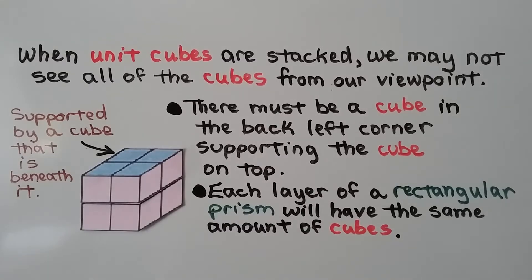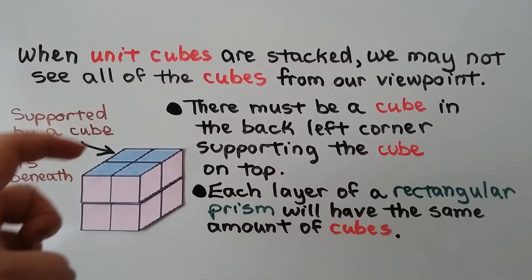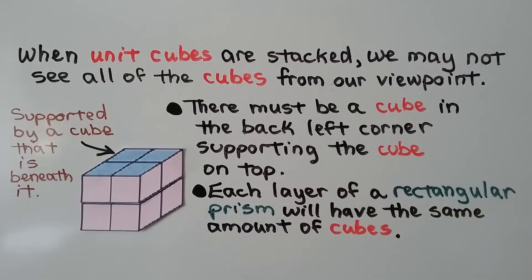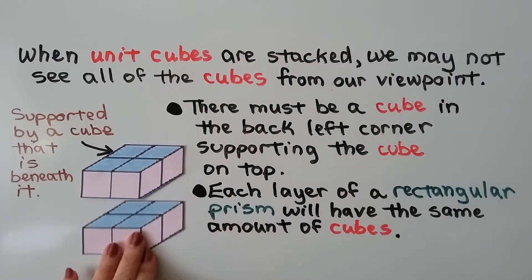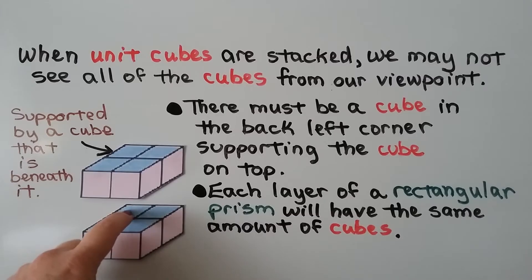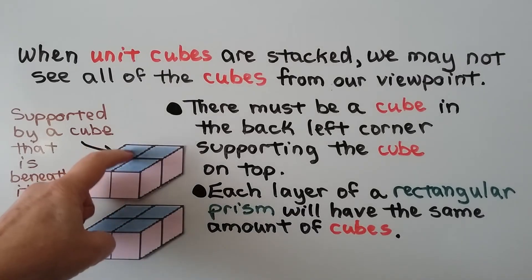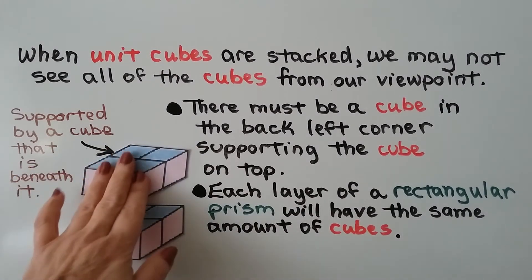When unit cubes are stacked, we may not see all of the cubes from our viewpoint. There must be a cube in the back left corner supporting the cube on top — it's supported by a cube beneath it. Each layer of a rectangular prism will have the same amount of cubes. If we lifted the top layer away, we'd see the hidden cube that was supporting the one above it.